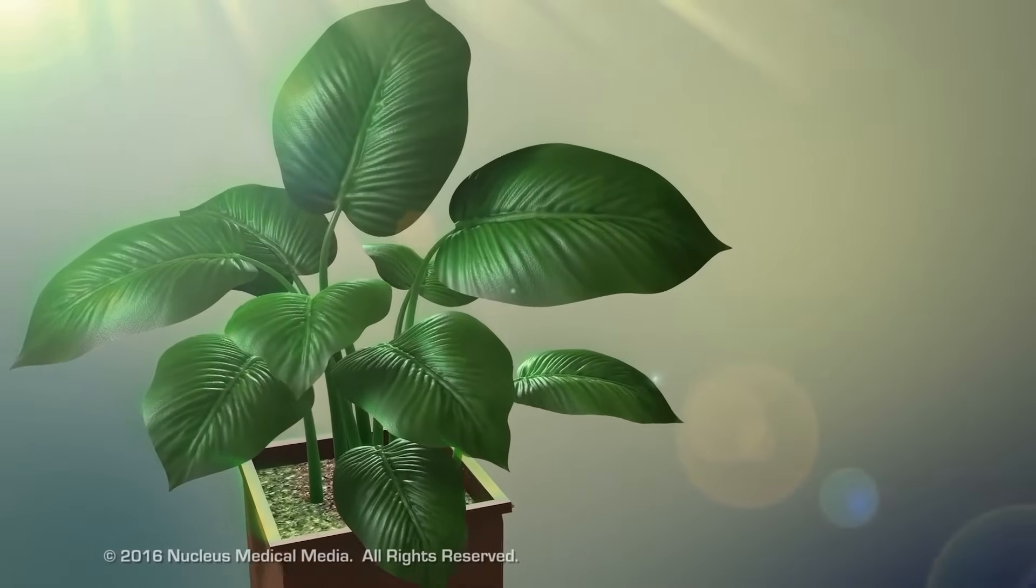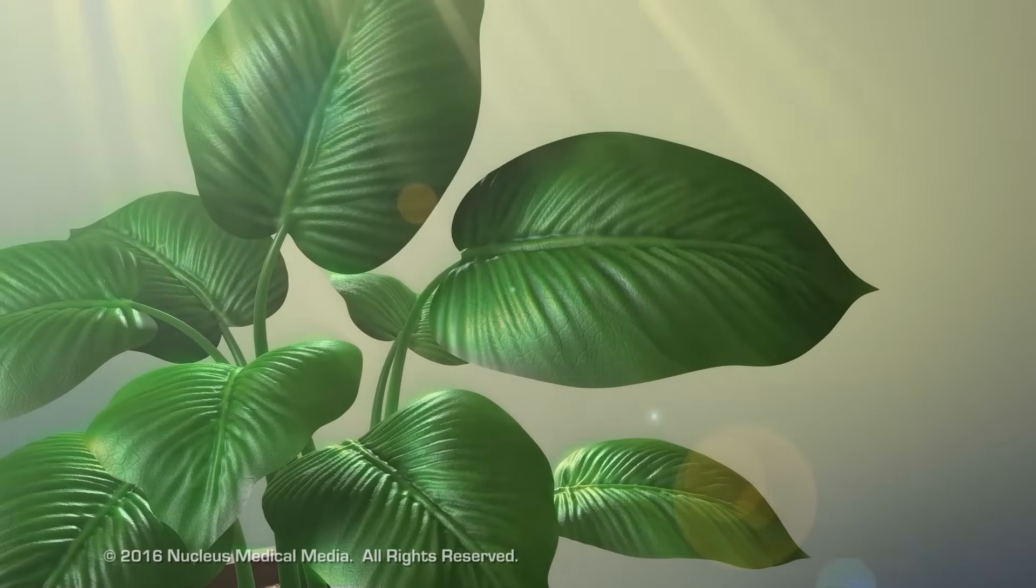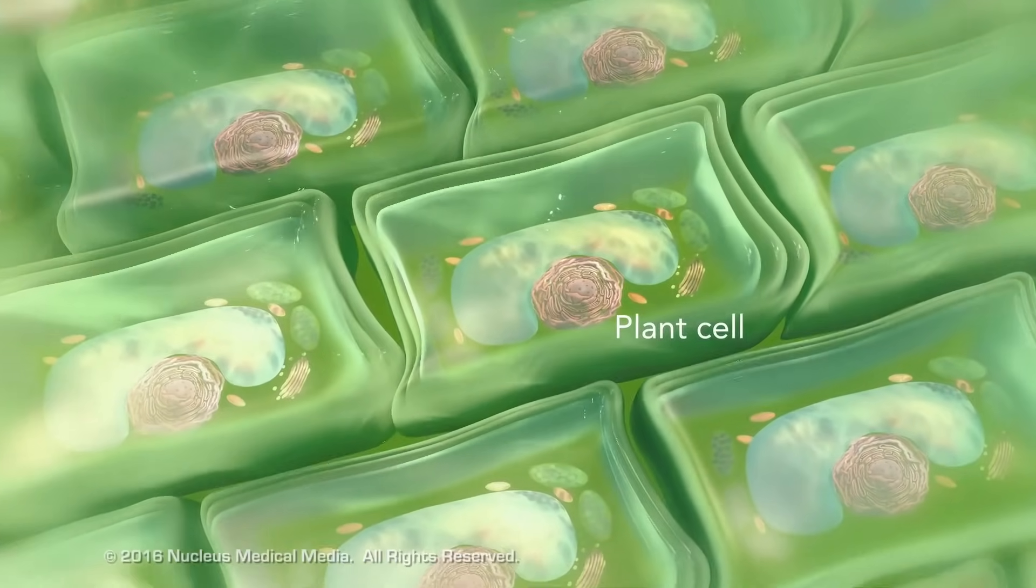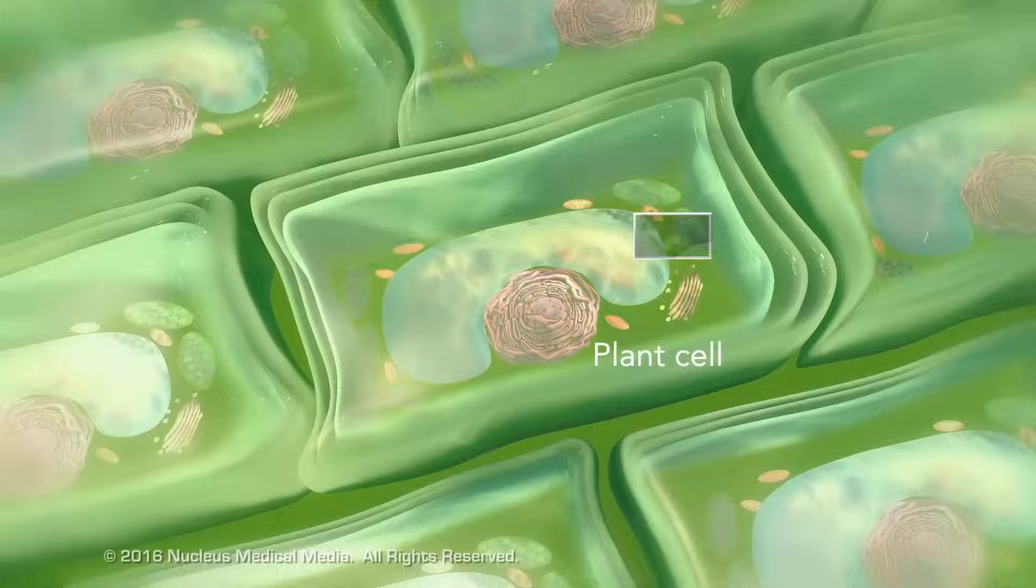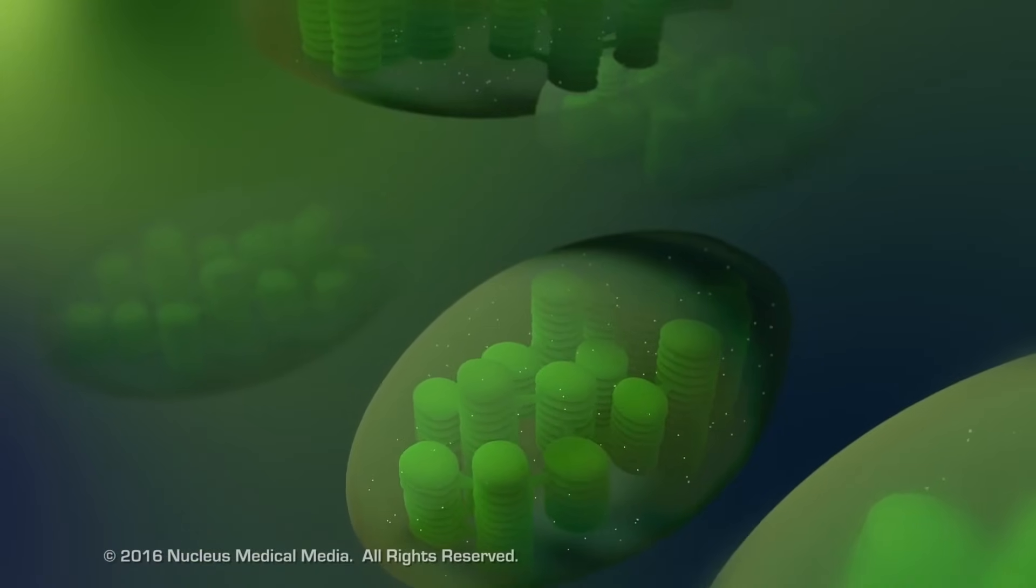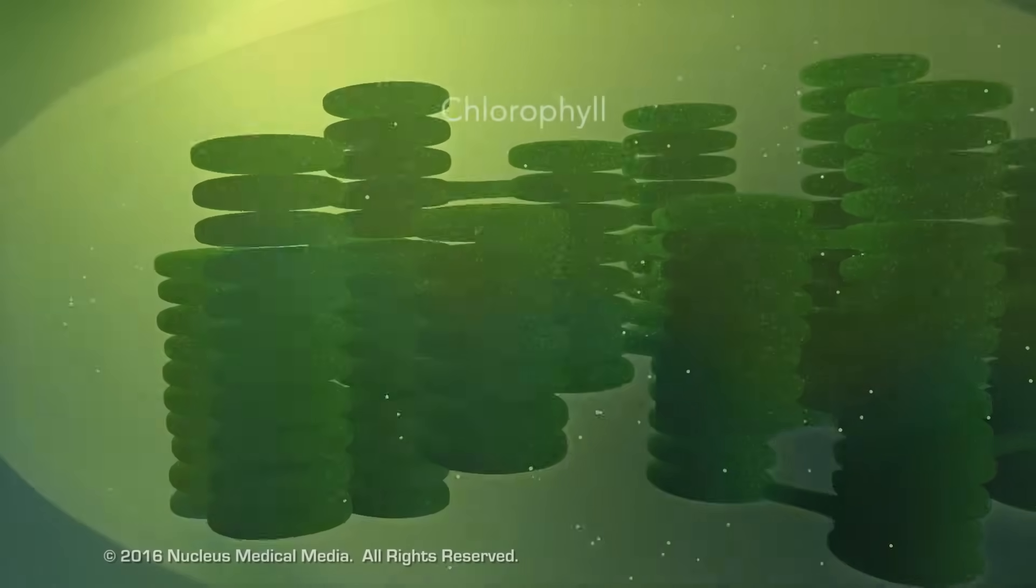Some organisms, such as plants that are photo-autotrophic, meaning they capture sunlight for energy, have cells with an organelle called a chloroplast. The chloroplast is where photosynthesis happens. It's green because it has a green pigment called chlorophyll.